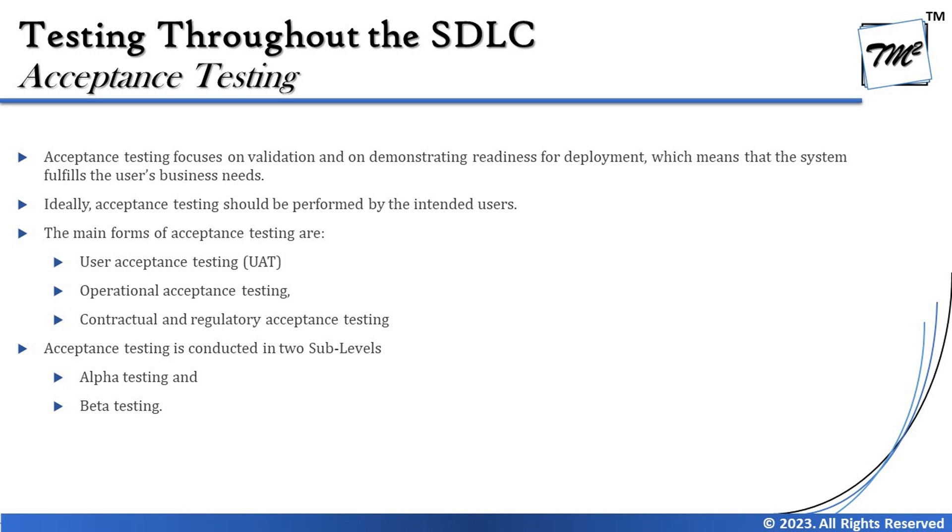Acceptance testing covers everything — functional, non-functional, standards, and regulatory. It is also conducted at two sub-levels: alpha testing and beta testing. Alpha testing begins first, where the application is tested by the customer who placed the order. The objective is to accept the product — to give a sign-off from the business to the development organization. Alpha testing is conducted in pre-production environments, not in the real world.